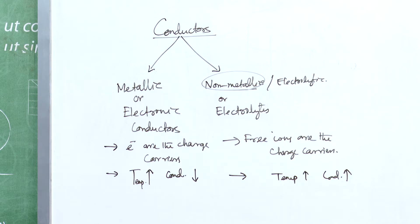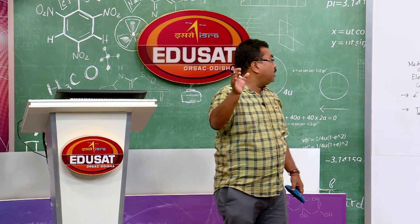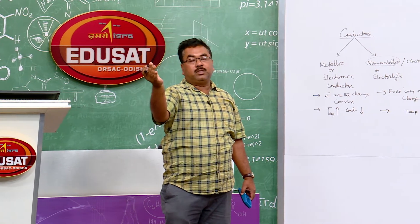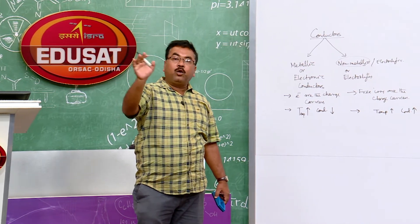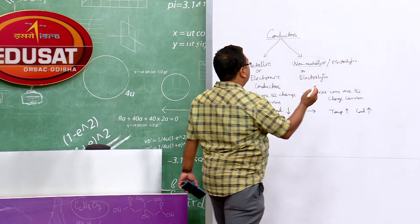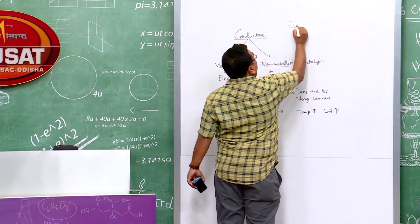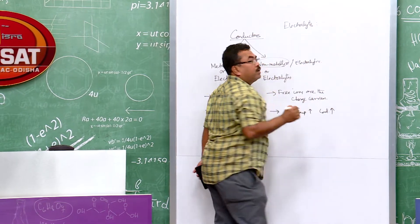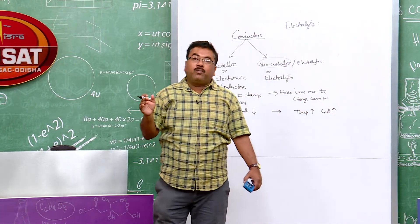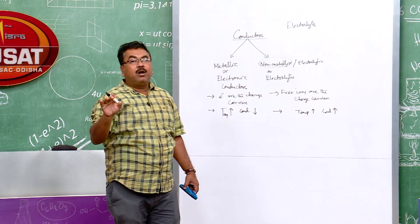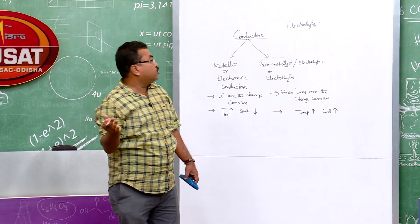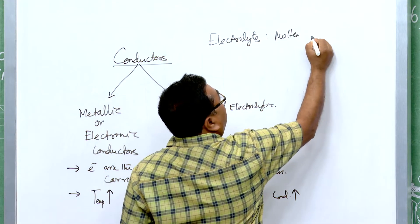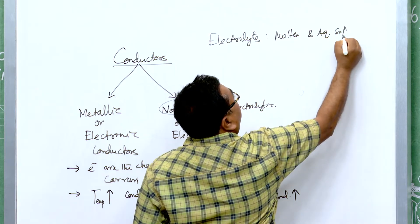For non-metallic conductors, we distinguish between electrolytes and non-electrolytes. Electrolytes allow electricity to pass through them both in their molten state and in aqueous solution.